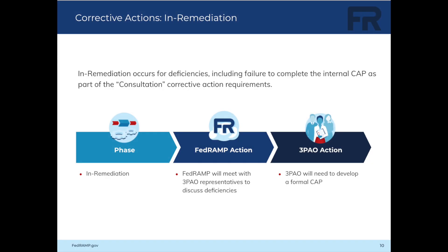If a 3PAO has deficiencies that result in them being placed in remediation — including if the 3PAO fails to complete the internal CAP while in consultation — a meeting will be held with representatives of the 3PAO to discuss their performance deficiencies, and the 3PAO will be required to develop a formal CAP.